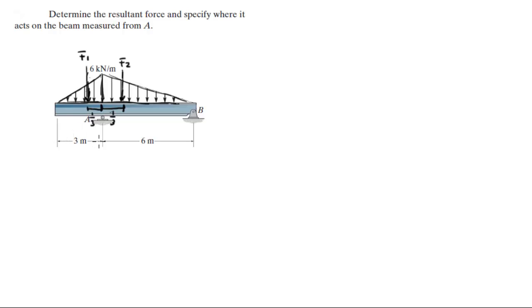So as you can see, the first triangle has a length of three meters, and one-third of three meters is one meter. And A is actually right here, so it's negative one meter. And F2 acts at one-third of six meters, which is two meters. That's where the two forces act, so let's find them.